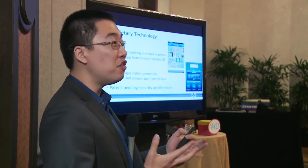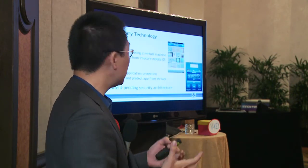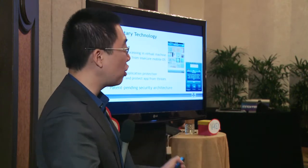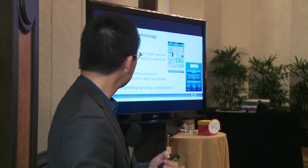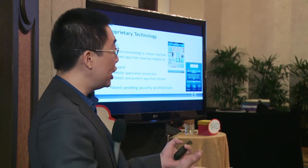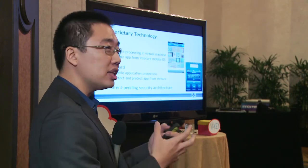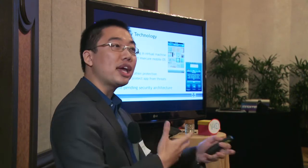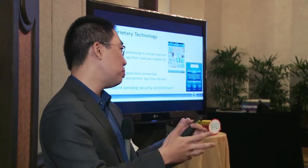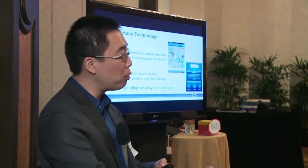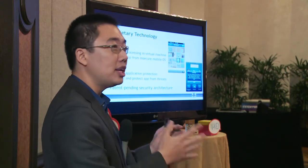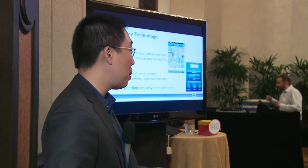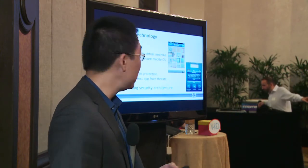Our proprietary technology is, obviously, VOS — our secure sandbox — which allows us to do secure processing within mobile applications regardless of the security of the underlying mobile device, essentially isolating the application from all threats. VGuard is the layer that wraps around that to protect and detect threats, with protection layers like a secure keyboard and data encryption. This entire architecture is patent pending, filed in Singapore and the US, and now pending internationally through the Patent Cooperation Treaty.